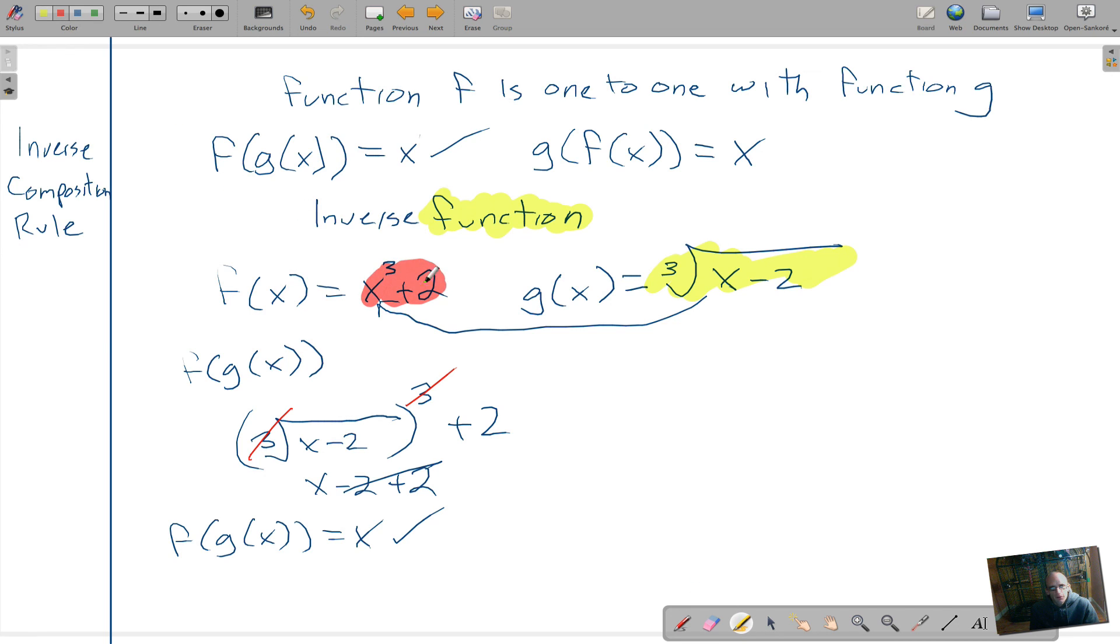If we throw this piece in for this value of x, you would get g(f(x)) equals the cubed root of, instead of x we have to toss in (x cubed plus 2) minus 2. There's nothing to distribute with this so we can actually just drop the parentheses. x cubed plus 2 minus 2. That goes away. The cubed root of x cubed also cancel out. So g(f(x)) also equals x.